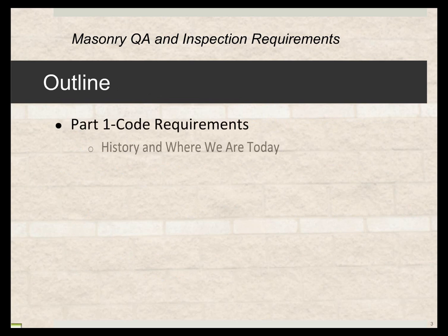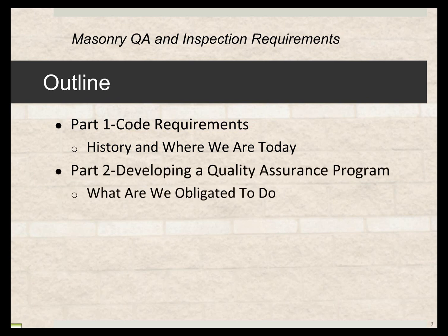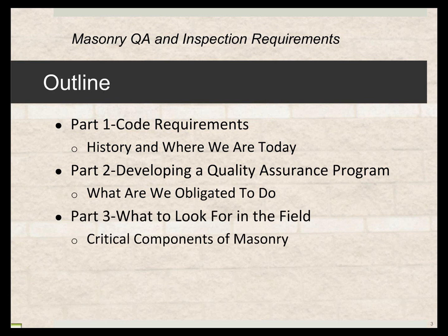The outline today: number one, we're going to look at code requirements — the history and where we are today. As I mentioned, it's been around for a long time, actually since 1943, when the Uniform Building Code imposed a provision requiring some inspection. We'll look at that language and get a sense of how ambiguous and loose it was. We're also going to look at developing a quality assurance program — what we are obligated to do, what to look for in the field, and the critical components of masonry. We'll have some examples, kind of like case studies, of project documents that have been published and how confusing they can be. If we look at them constructively and critically, we can make our own project documents a lot better.